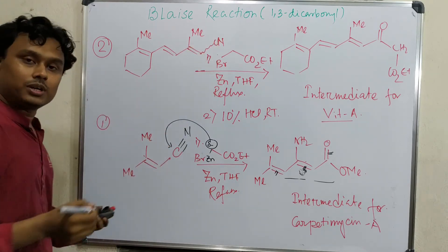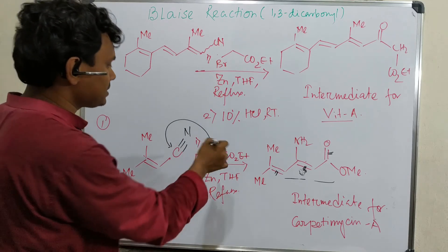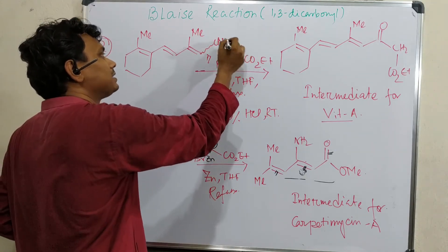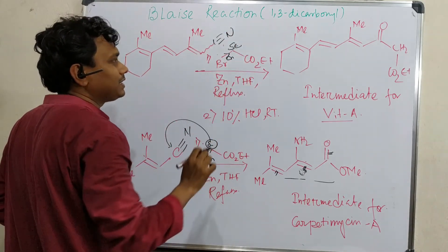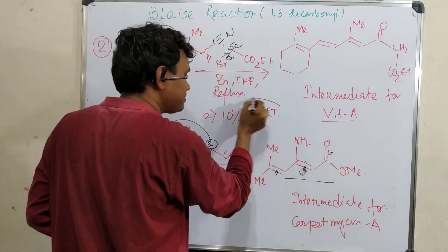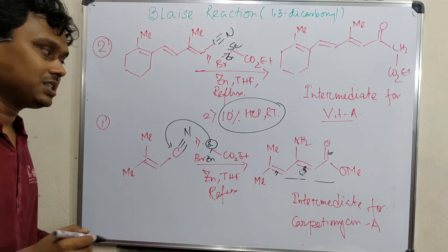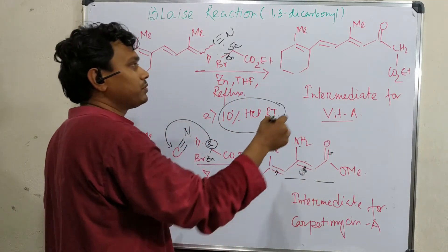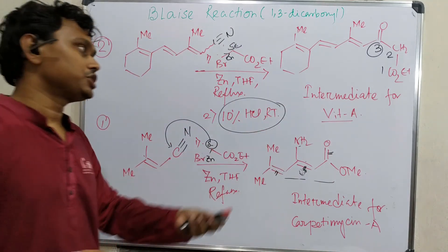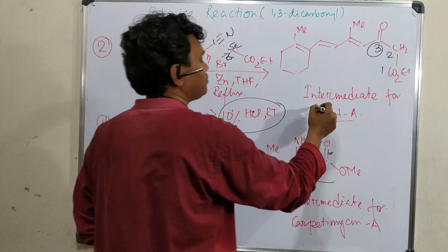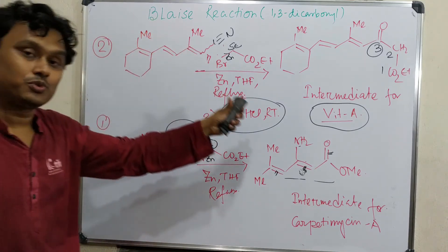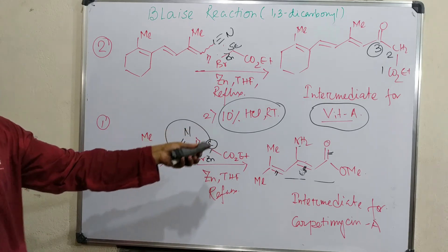The second example: this is also a conjugated cyano compound — cis or trans not mentioned here. Similarly, in the presence of zinc it produces this nucleophile delta minus, and this nucleophile attacks this CN. As discussed previously, first it produces the imine intermediate. In the second step, 10% HCl under room temperature conditions hydrolyzes the imine and ultimately produces the carbonyl compound. So it is a 1,3-dicarbonyl compound used as an intermediate in the preparation of vitamin C.